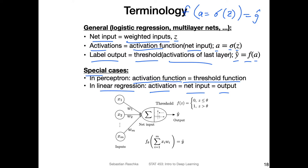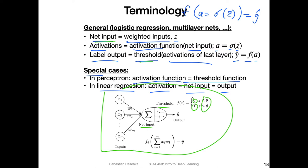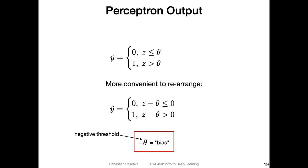Let's focus now on the perceptron and only worry about the net input and the threshold. To summarize: first we compute the weighted inputs as the net input, then we apply the threshold to return either zero or one depending on the threshold value theta.